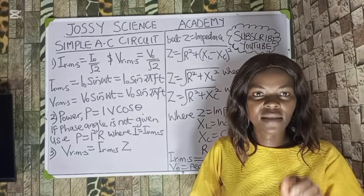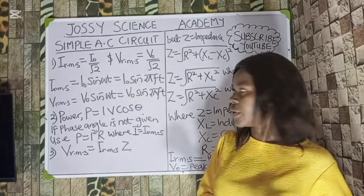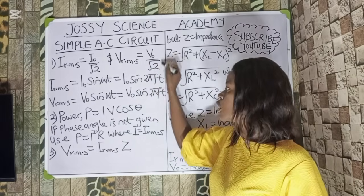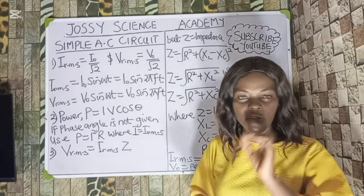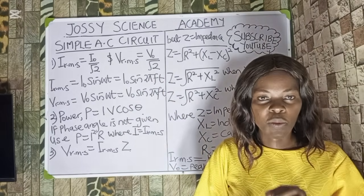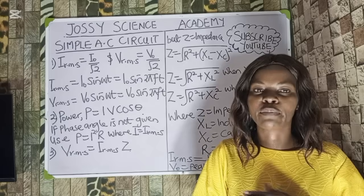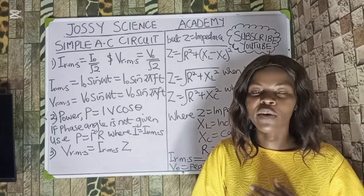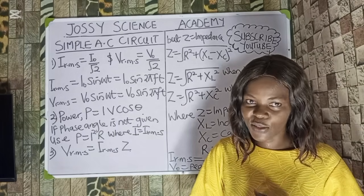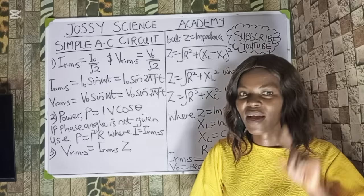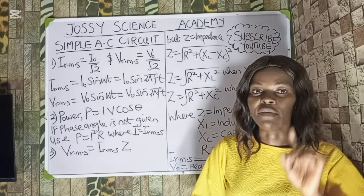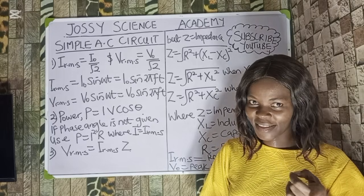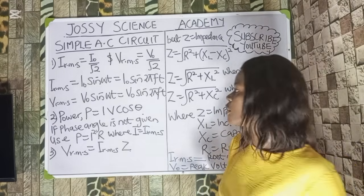So I_RMS equals I₀ over root 2, and V_RMS equals V₀ over root 2. These formulas connect the root mean square values and the peak values of current and voltage respectively.